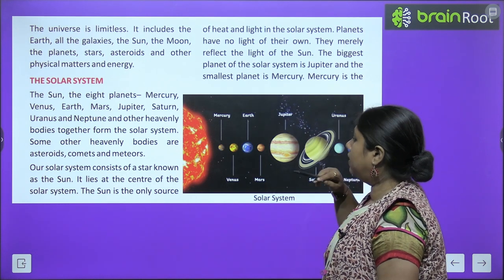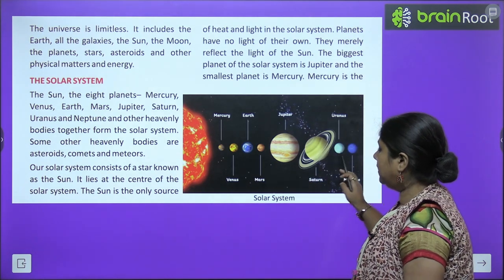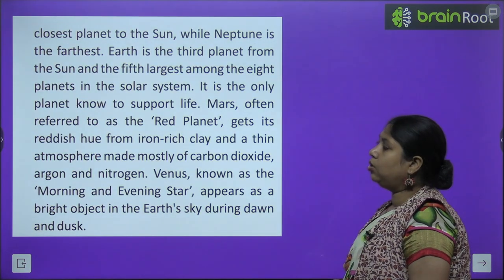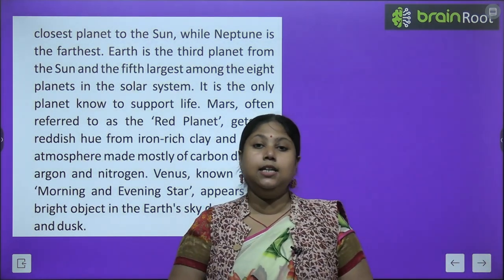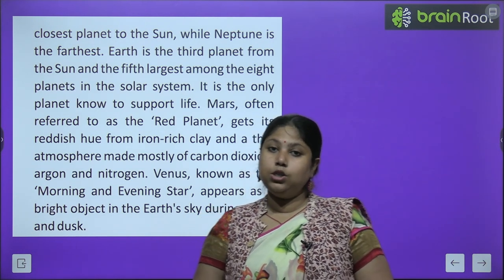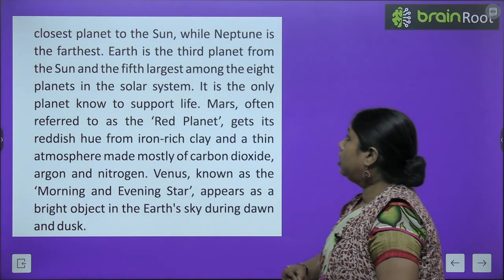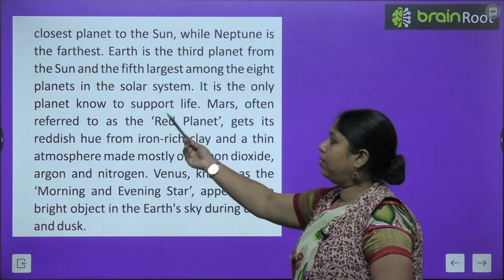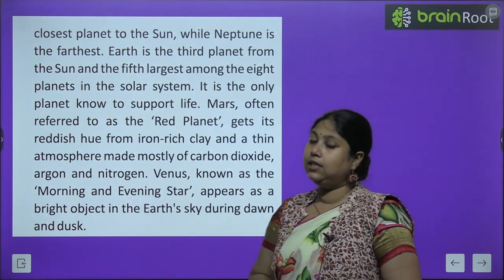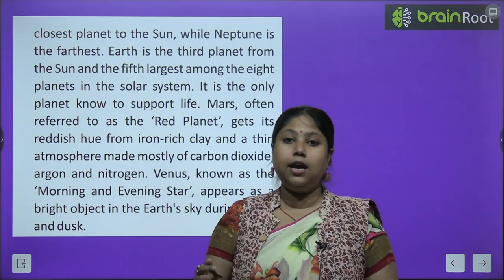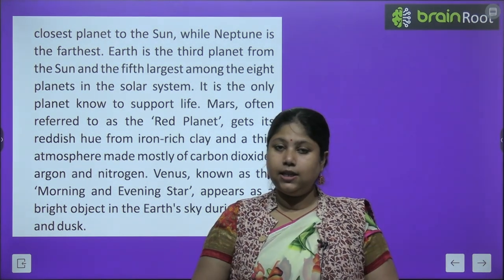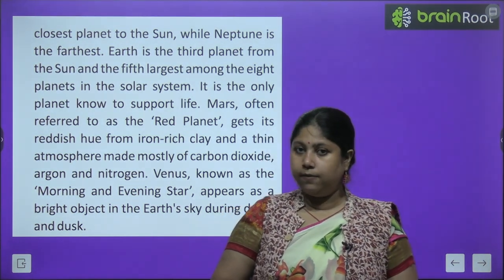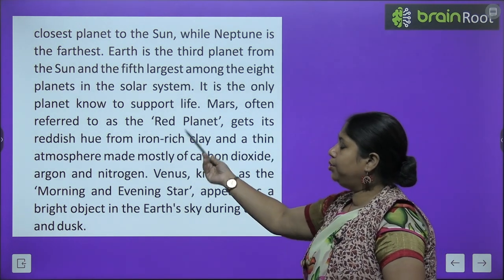The biggest planet of the Solar System is Jupiter and the smallest is Mercury — aap picture mein dekh sakte hain. Mercury is the closest planet to the Sun, and Neptune is the farthest. Earth is the third planet from the Sun and the fifth largest among the eight planets in the Solar System.